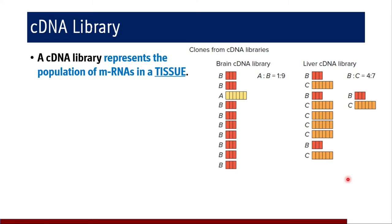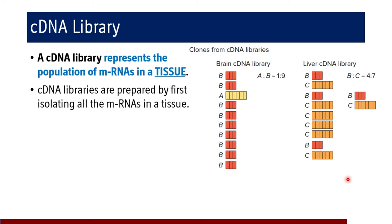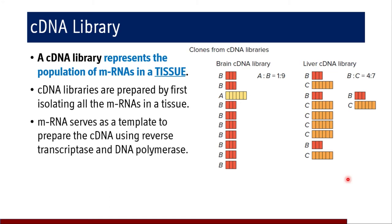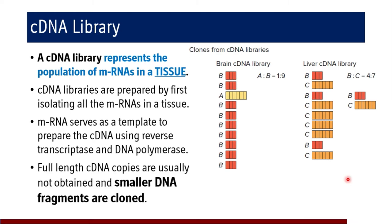cDNA libraries are prepared by first isolating all the mRNAs in a tissue. The mRNA serves as a template to prepare DNA using reverse transcriptase and DNA polymerase in subsequent steps. Full-length complementary DNA copies are usually not obtained, and smaller DNA fragments are cloned — only the necessary sequences are cloned, excluding junk material from cDNA libraries.